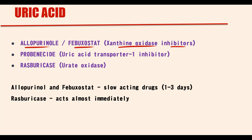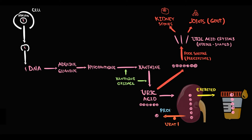The next drug is probenecid. Probenecid inhibits uric acid transporter 1 (URAT1). With inhibition of this transporter, reabsorption of uric acid decreases, and thereby the amount of uric acid in the blood progressively decreases.